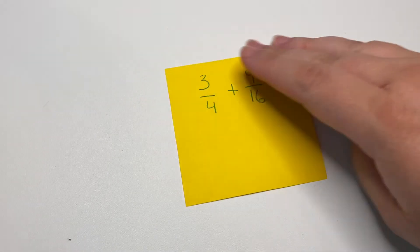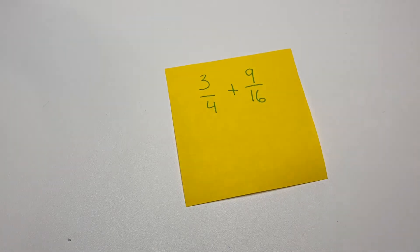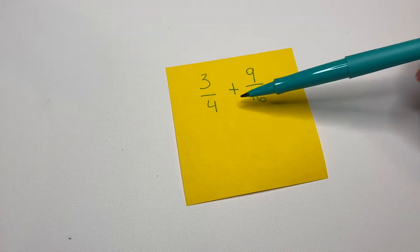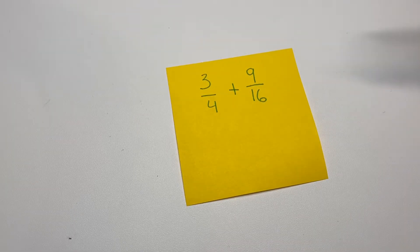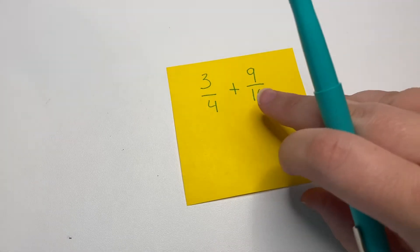So when we are talking about unlike denominators, we're talking about this. These are the denominators 4 and 16, so they are not the same, so they are unlike. That's the kind of problem we're talking about.